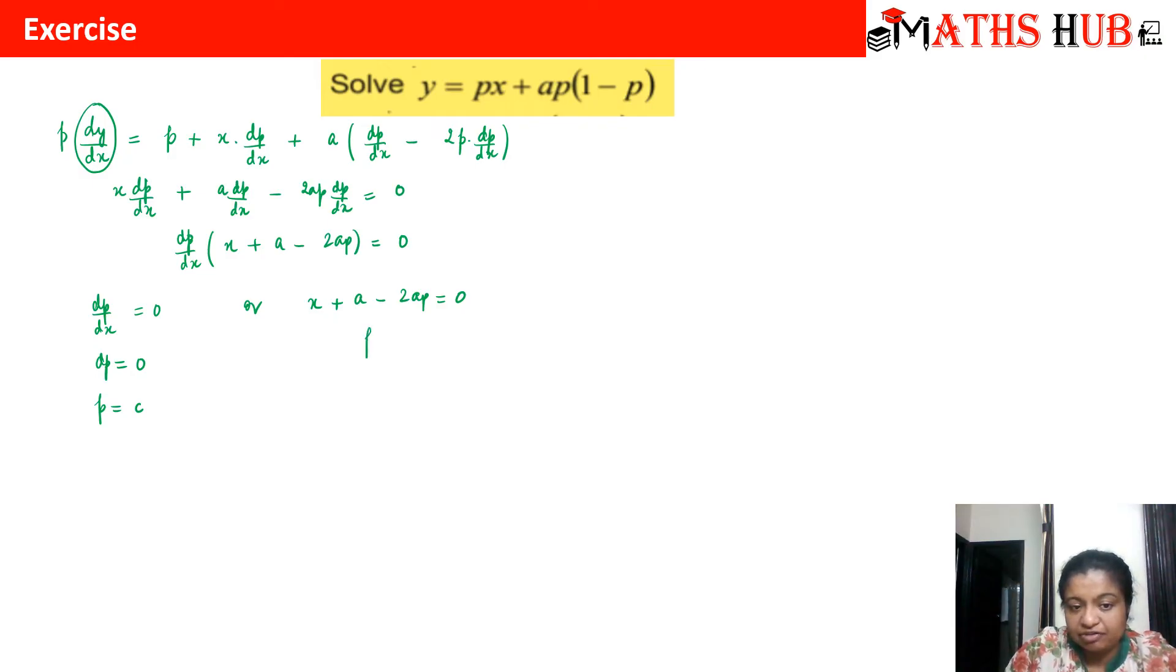But let us see what is the value of p from here. p comes out to be x plus a by 2a. Now let us evaluate this value p equal to c in the given equation. So y comes out to be cx plus a times c times 1 minus c. So this becomes your answer.